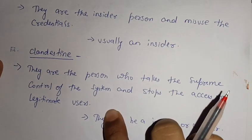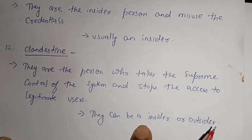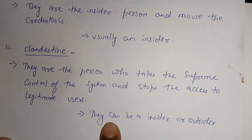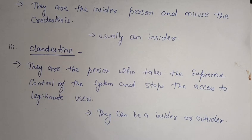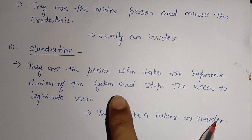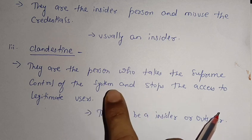The third type is Clandestine. These are persons who take supreme control of the system and stop access to legitimate users. They can be either an insider or outsider. Once they gain access to an account, they change the credentials and login details, committing fraud in this way.